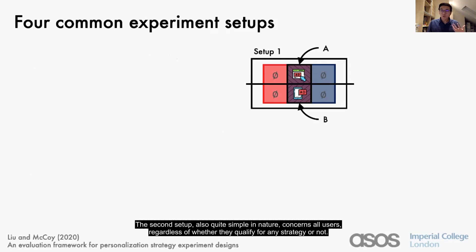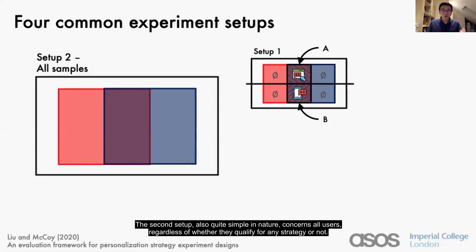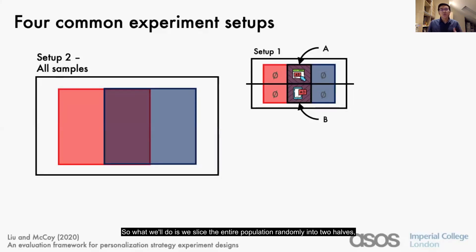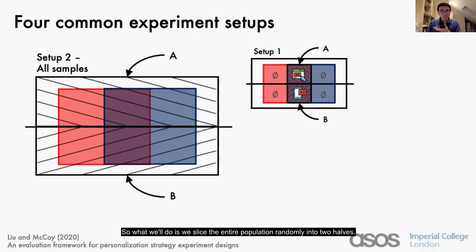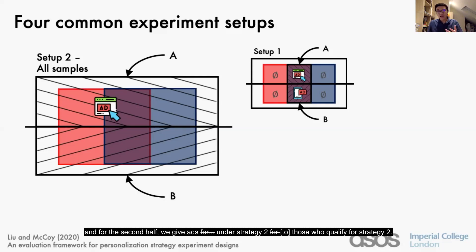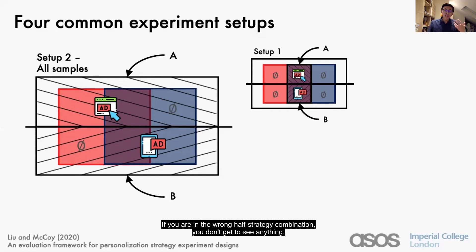The second setup, also quite simple in nature, concerns all users regardless of whether they qualify for any strategy or not. We slice the entire population randomly into two halves. For the first half, we give ads under strategy one to those who qualify for strategy one. For the second half, we give ads under strategy two to those who qualify for strategy two. If you're in the wrong half-strategy combination, you don't get to see anything.